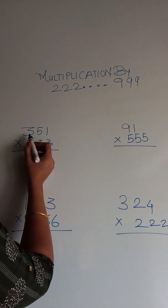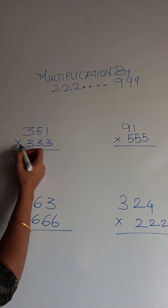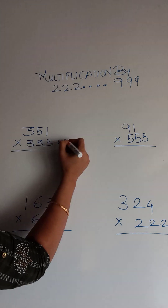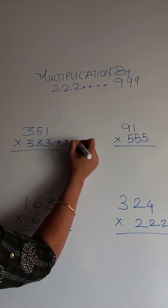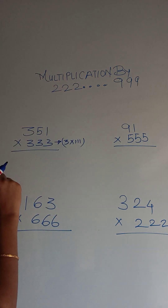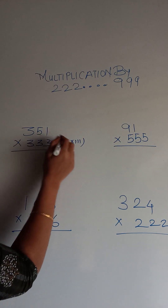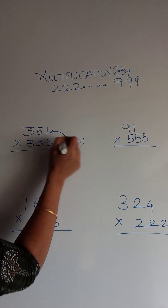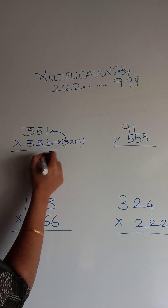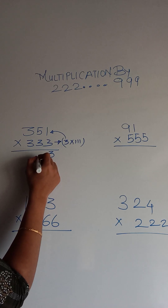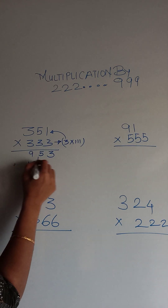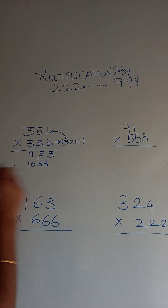So the first example is 351 into 333. What we are going to do is split 333 into 3 into 111. So first we will multiply this number with 3: 3 into 3 ones is 3, this is 15, and this is 9, that is equal to 1053.